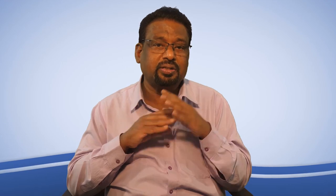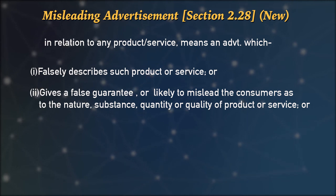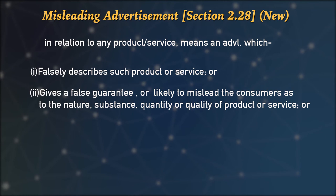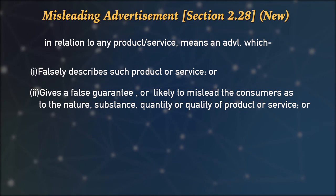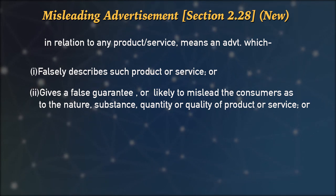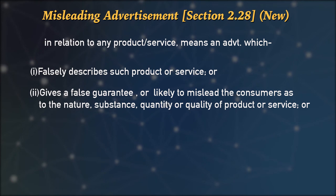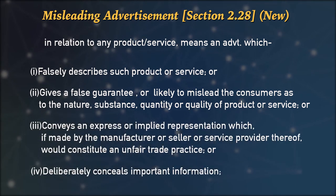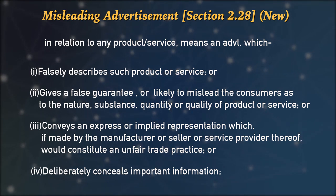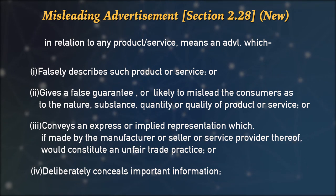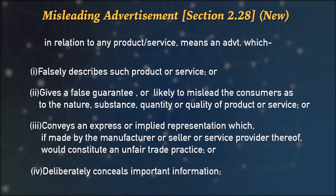Misleading advertisement is a new definition under the 2019 Act. Misleading advertisement in relation to any product or service means an advertisement which falsely describes such product or service, or gives a false guarantee, or is likely to mislead the consumers as to the nature, substance, quantity, or quality of the product or service, and conveys an express or implied representation which, if made by the manufacturer, seller, or service provider, would constitute an unfair trade practice. If they make a promise or representation which comes under unfair trade practice, it will also lead to a misleading advertisement.